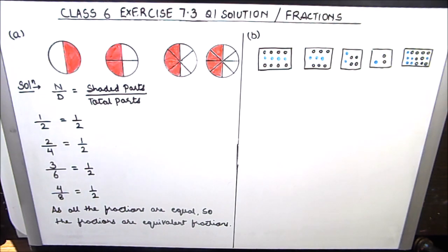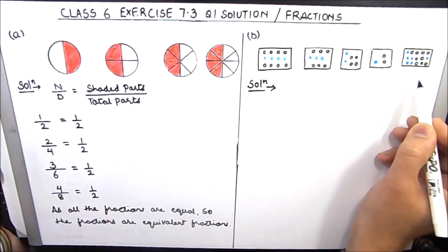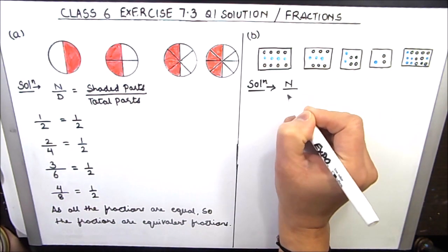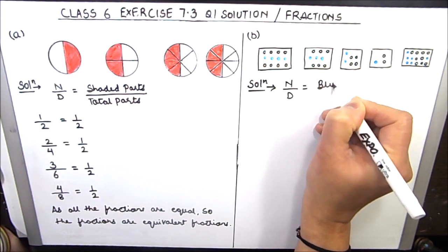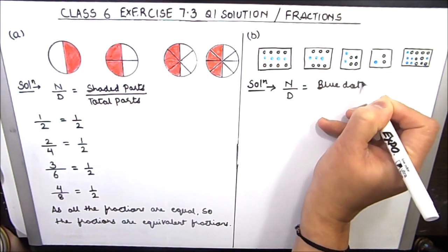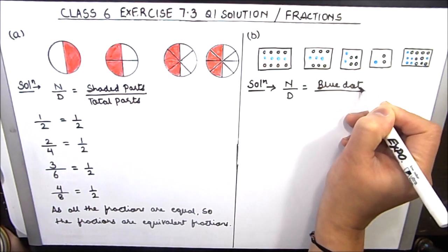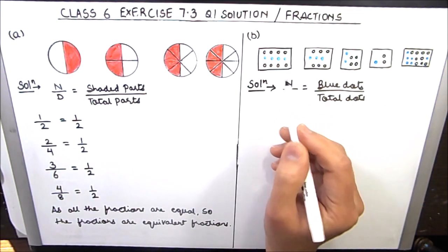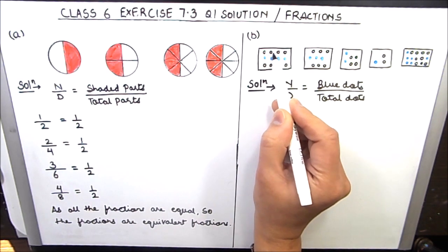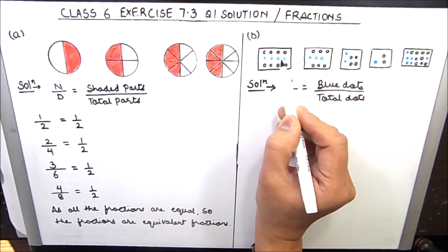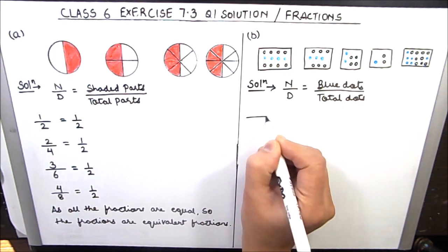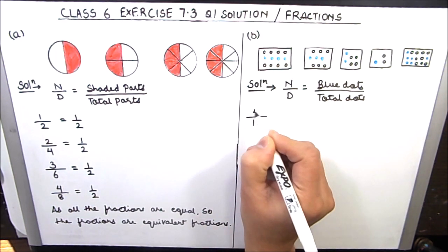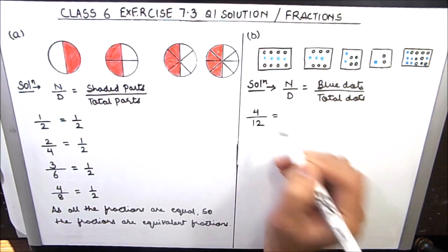In part B we have been given a few pictures. In these pictures, blue dots will be considered as the shaded part. So our numerator will be the blue dots and the denominator will be the total number of dots. Let's count the dots for the first picture: 1, 2, 3, 4, 5, 6, 7, 8, 9, 10, 11, 12. Total number of dots is 12, out of which 4 dots are blue. So the fraction is 4 by 12.